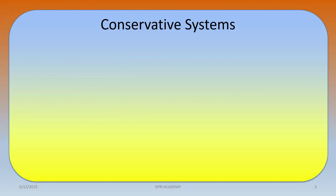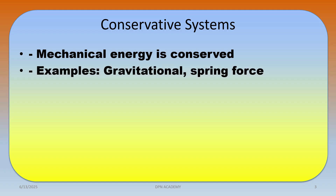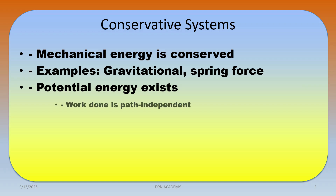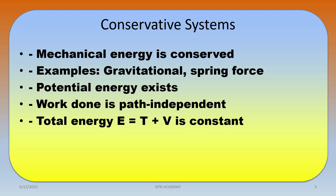So what is meant by a conservative system? In a conservative system, mechanical energy is conserved. Examples include gravitational force and spring force. In a conservative system, potential energy exists and work done is path independent. The total energy — kinetic energy plus potential energy — remains constant.